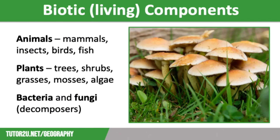There are three types of biotic components found in an ecosystem. These are animals, including mammals, insects, birds and fish. Plants, including trees, shrubs, grasses, mosses and algae, which provide both food and shelter for many species of wildlife. And bacteria and fungi — these microorganisms are decomposers, so they break down dead matter to release nutrients back into the soil to be recycled.